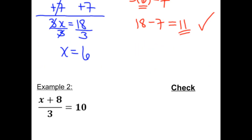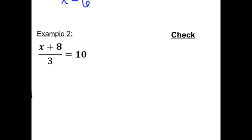Let's try another example. Here we have x plus 8 divided by 3 equals 10. So the first thing I need to do is undo this division of 3. And we undo division with multiplication. So I will multiply by 3. And whatever I do to one side of the equation, I have to do to the other side of the equation.